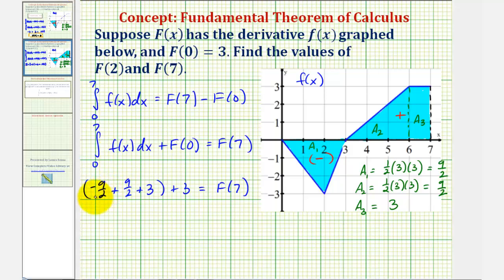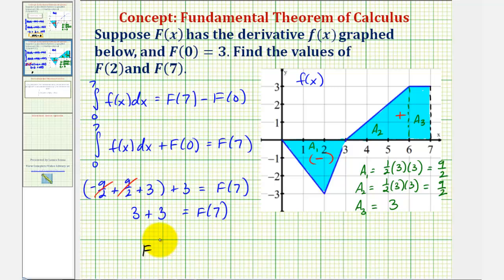The negative 9 halves and positive 9 halves simplify to zero, so we have 3 plus 3 equals big F of 7. Therefore, big F of 7 equals 6.